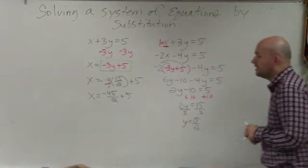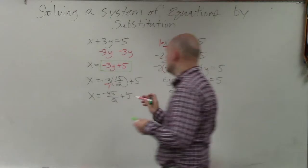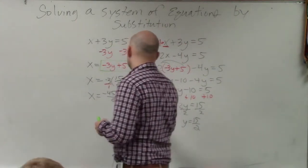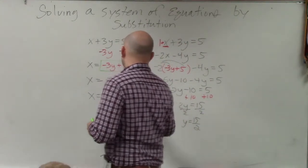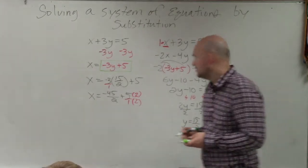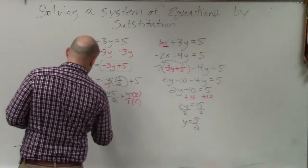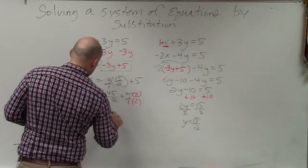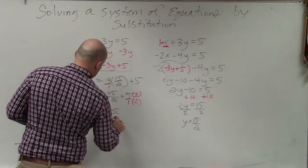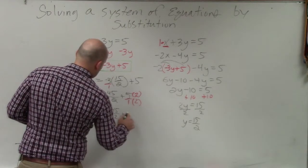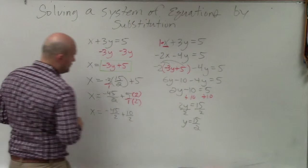To add a whole number to a fraction, you have to have common denominators. So I'd multiply by 2 over 2. And what I get is x equals negative 45 over 2 plus 10 over 2.